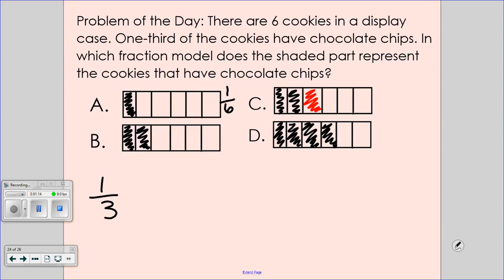What about B, Aiden? B shows two-sixths. If you are not labeling, you need to be labeling.